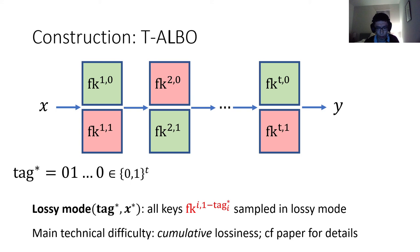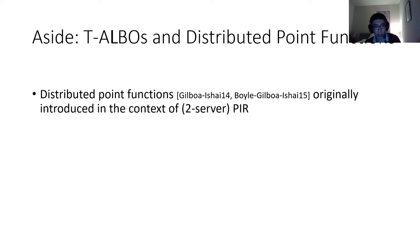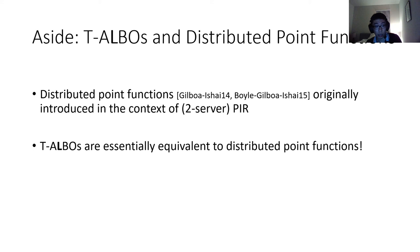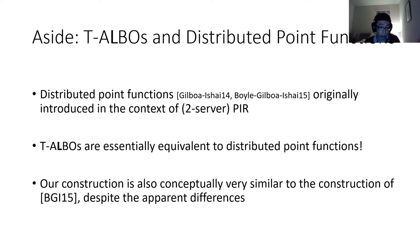As a quick aside, we noticed that T-ALBOs are actually very similar to distributed point functions, even though distributed point functions were originally introduced and used in very different contexts — originally in the context of PIR. It turns out that T-ALBOs, looked at the right way, are essentially equivalent to distributed point functions — a pretty surprising conceptual connection. And the construction I just described of chaining is actually extremely similar to constructions of distributed point functions from one-way functions, even though they might look visually different.